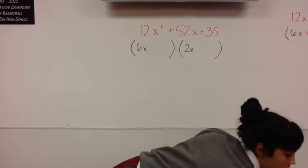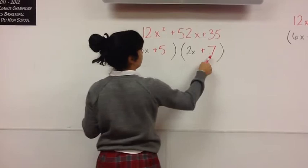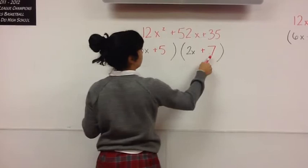The second step is to look at the last term, which is 35. You're going to add 5, and you're going to add 7. Multiply those together, you get 35.